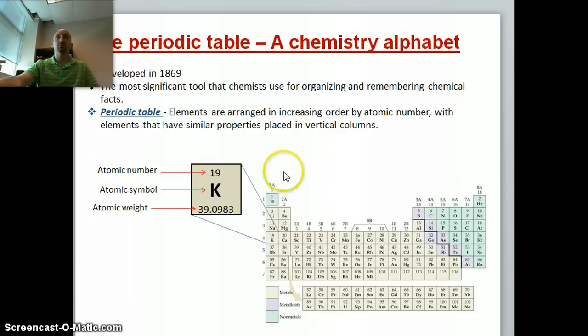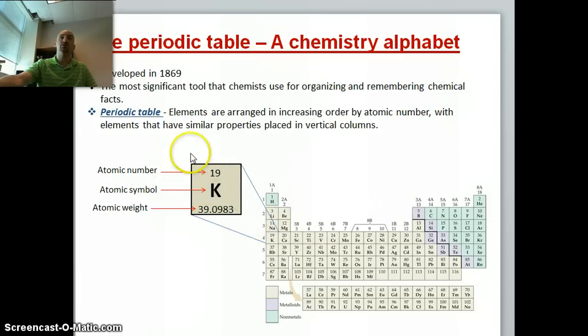The periodic table, shown here, was developed back in 1869, and it's really just our chemistry alphabet. All elements on the periodic table with their atomic number and atomic weight are shown here. This is usually how you see it on the periodic table.